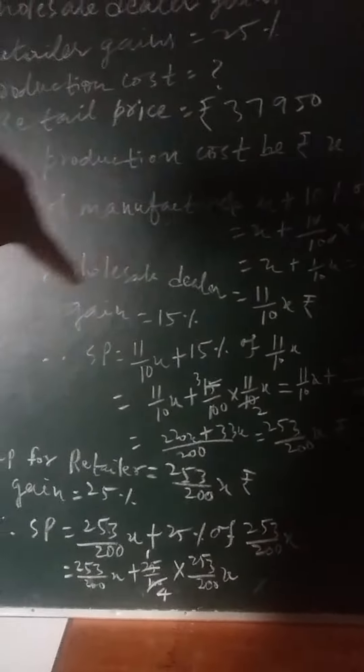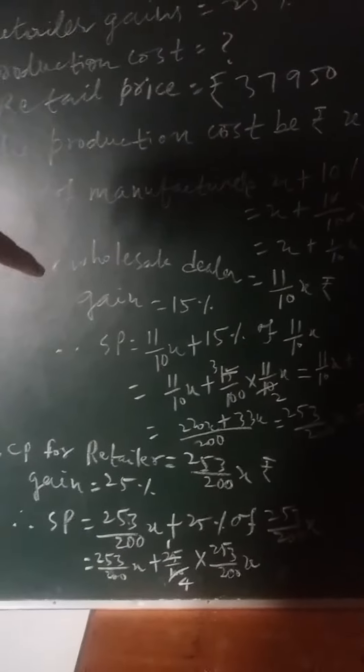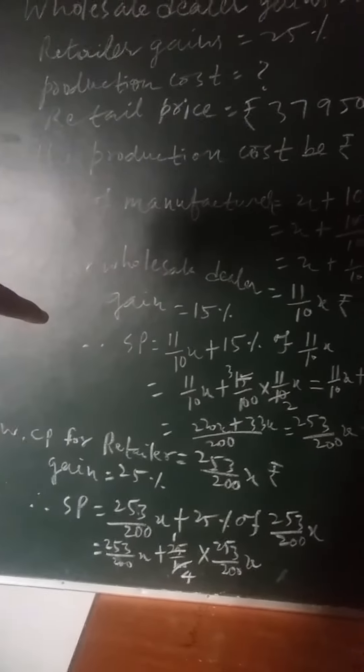Now cost price for wholesale dealer equals 11 by 10 X rupees. Gain equals 15%, so selling price for wholesale dealer will be 253 by 200 X rupees.